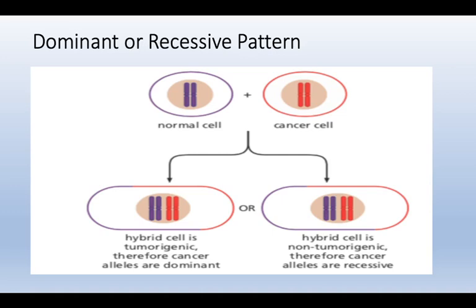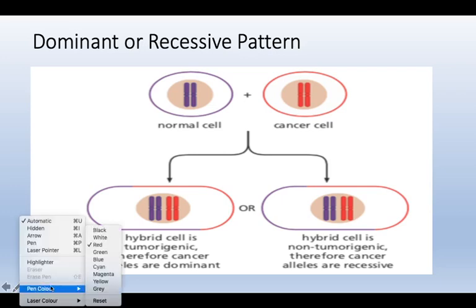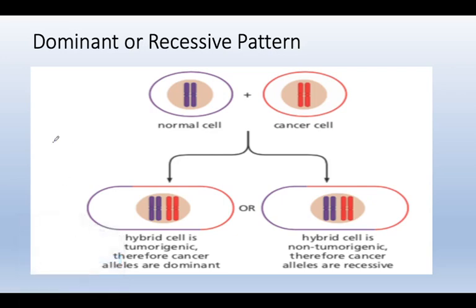For example, if we fuse a normal mouse cell with a human cancer cell and a tumor is observed after injecting the hybrid into a mouse, we say that the tumor originating in the human is because of a viral factor.